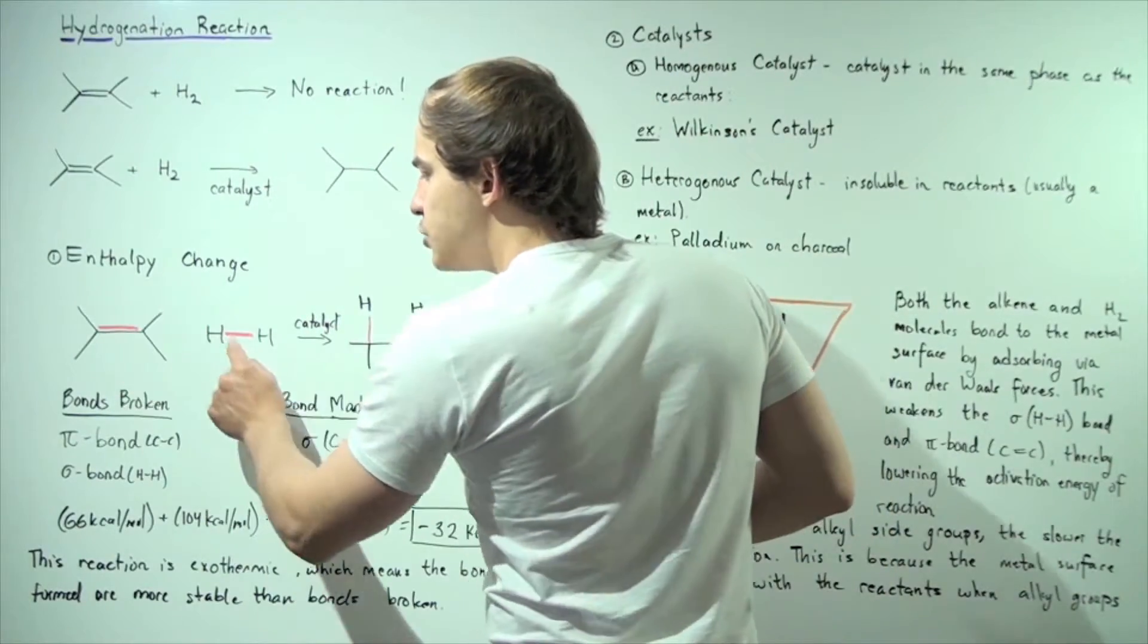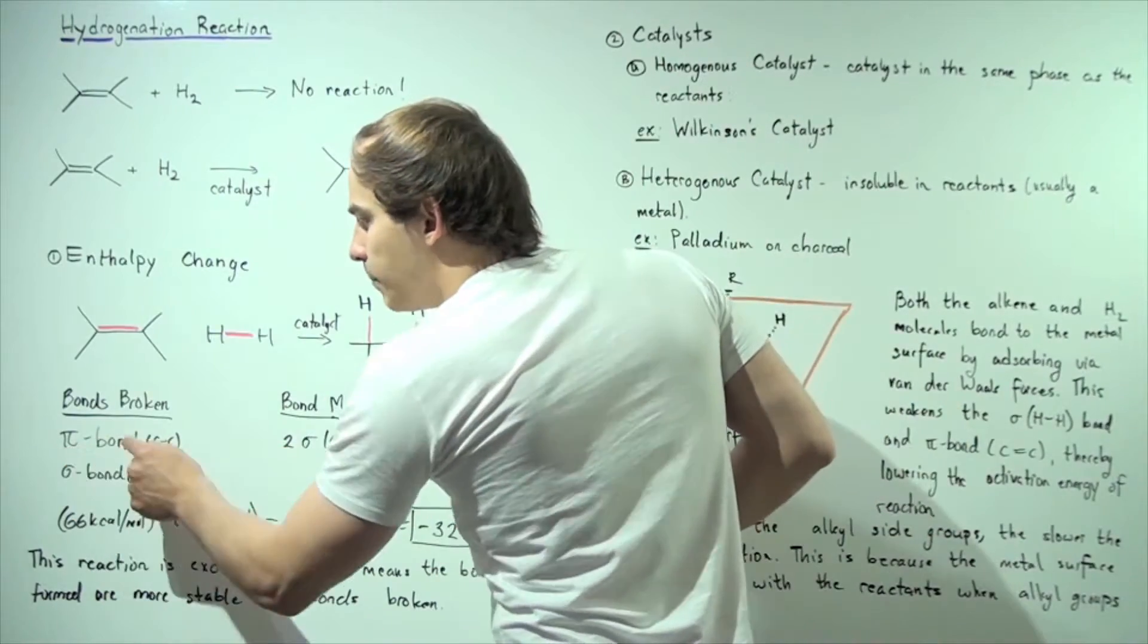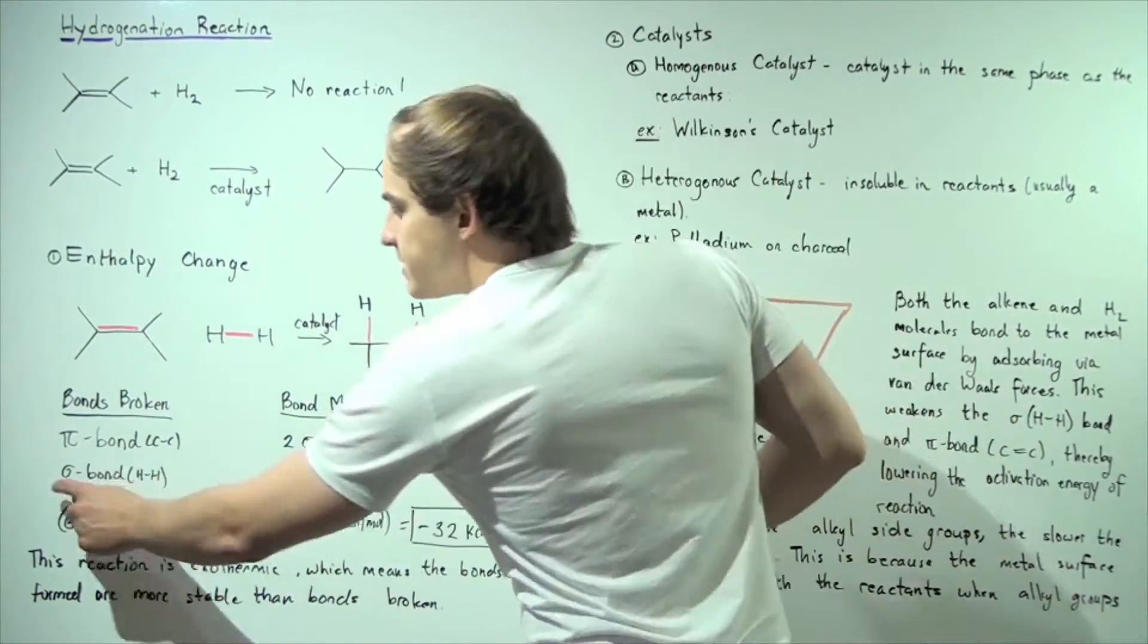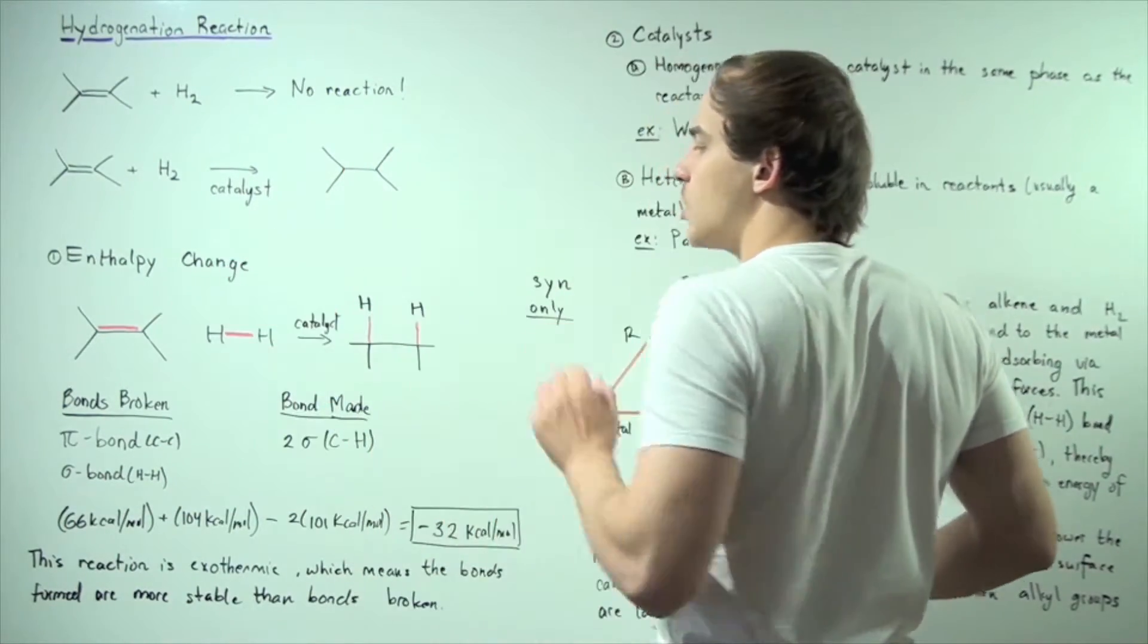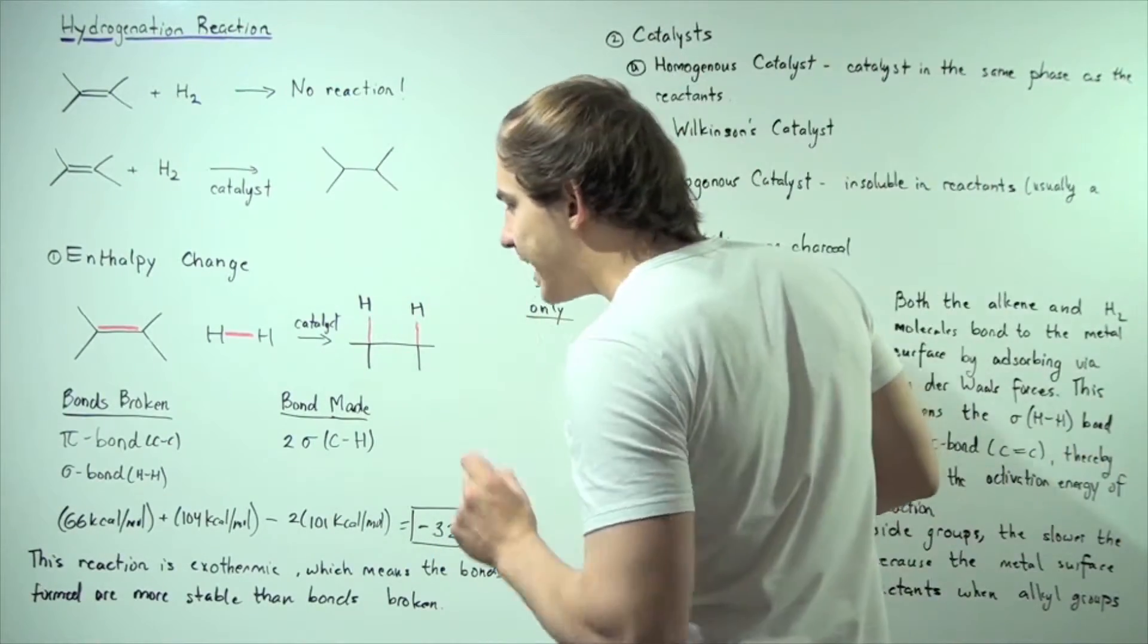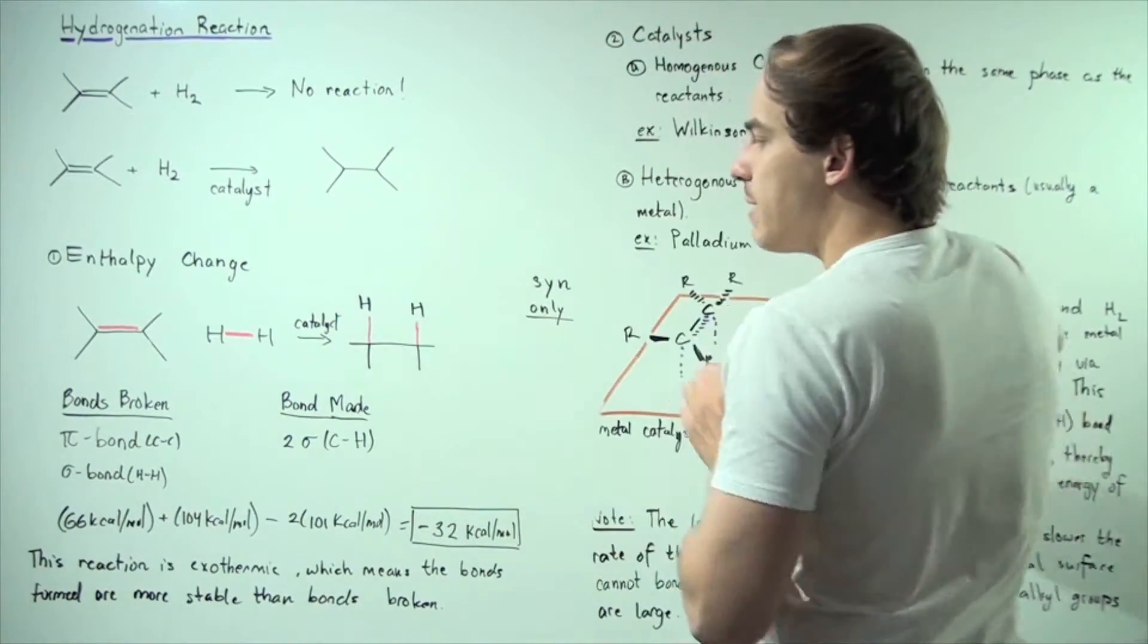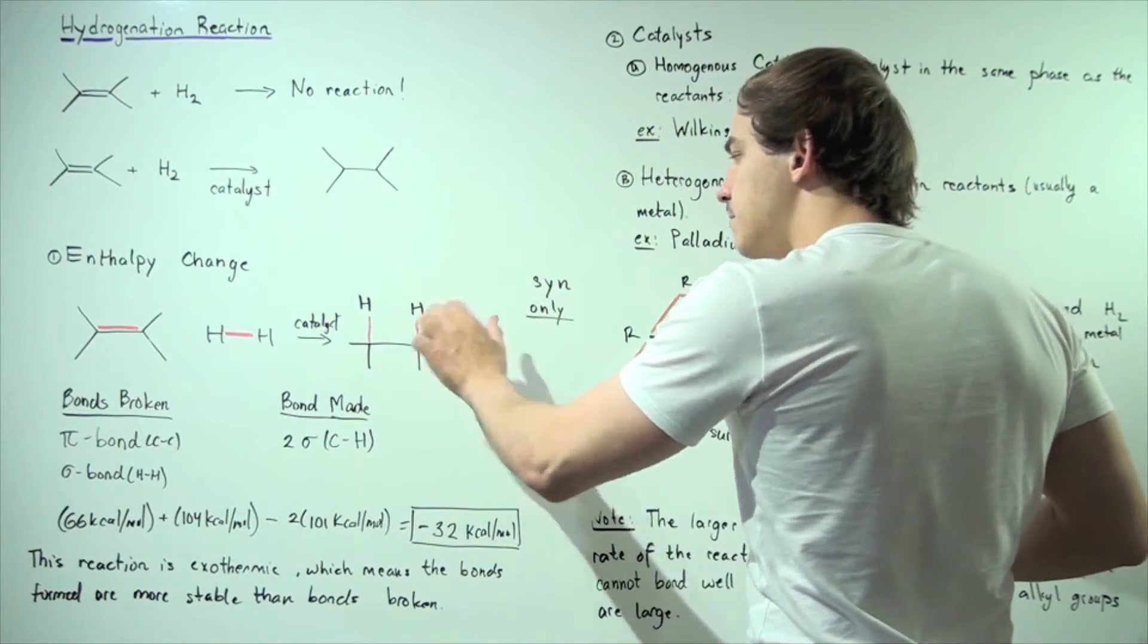So which bonds are being broken? Well, we have one, two bonds being broken in the reactant side. We have the pi bond between these two carbons being broken and we have the sigma bond between these two H atoms also being broken. Now, which bonds are being made and how many are being made? Well, two identical sigma bonds between the carbon and H are being made. So two bonds are being broken, two bonds are being made.